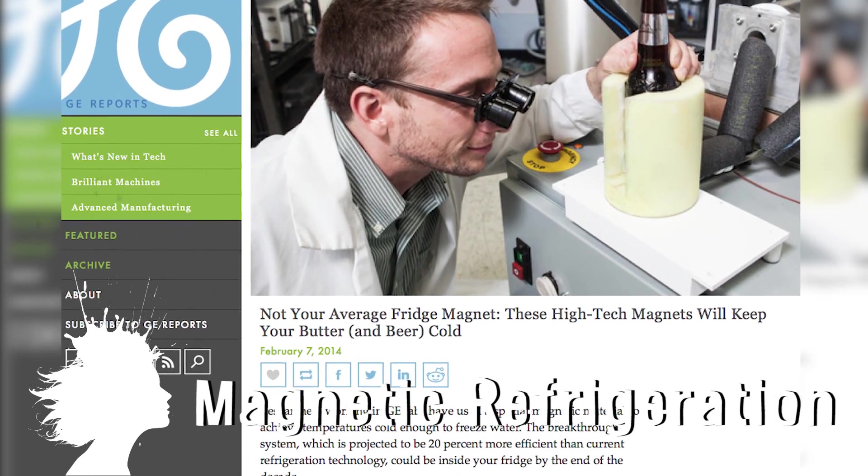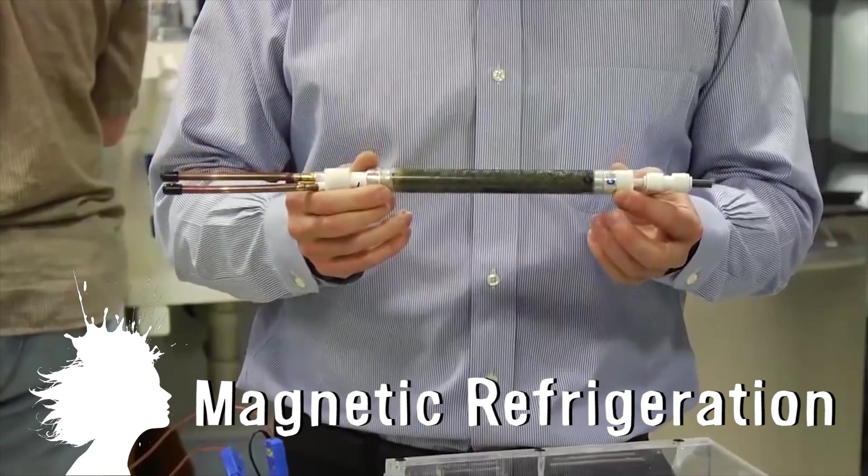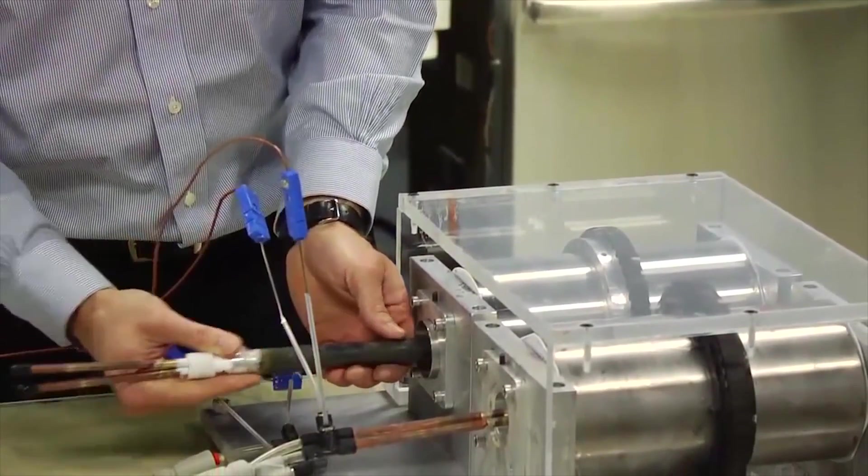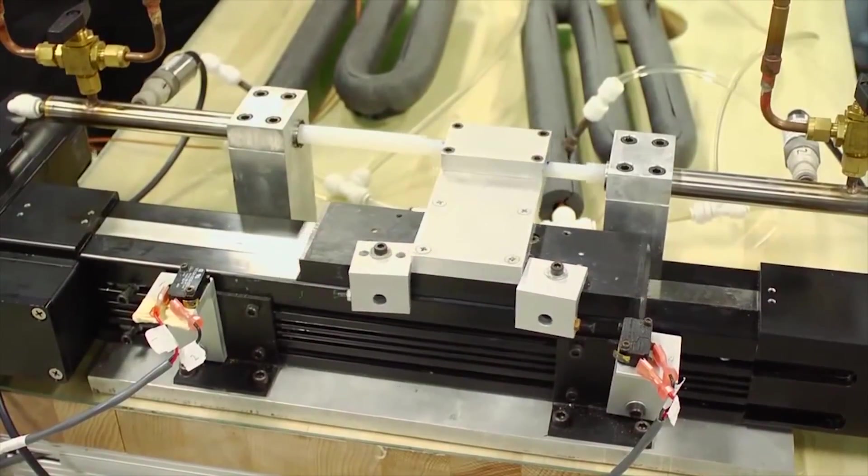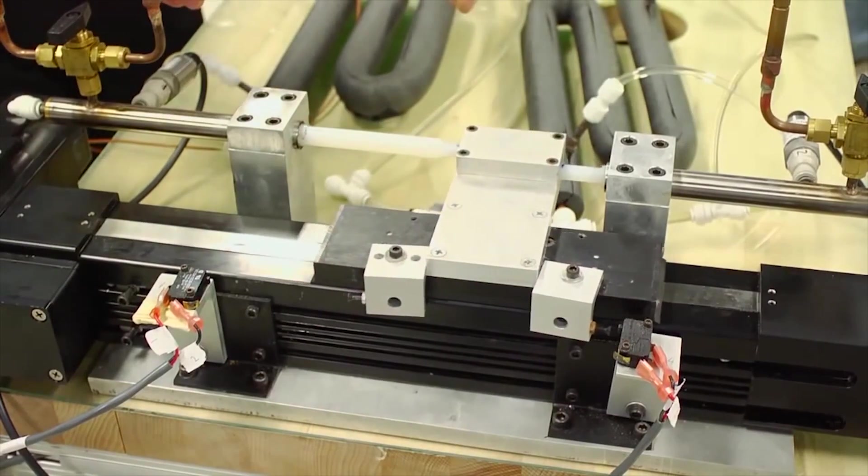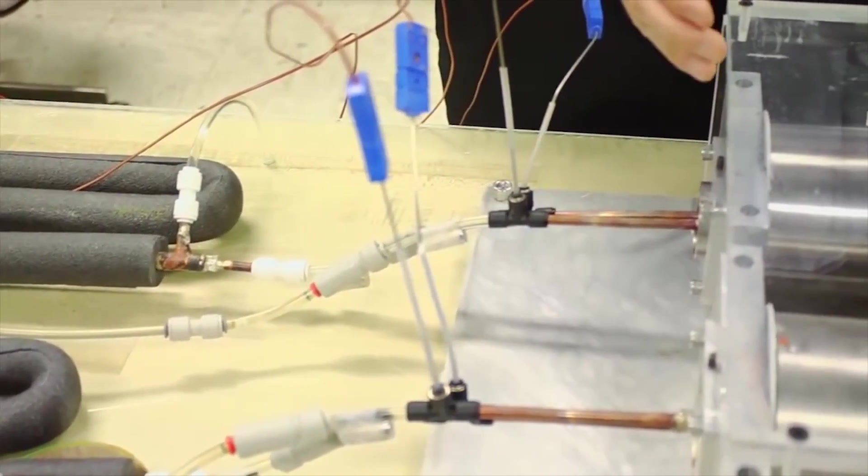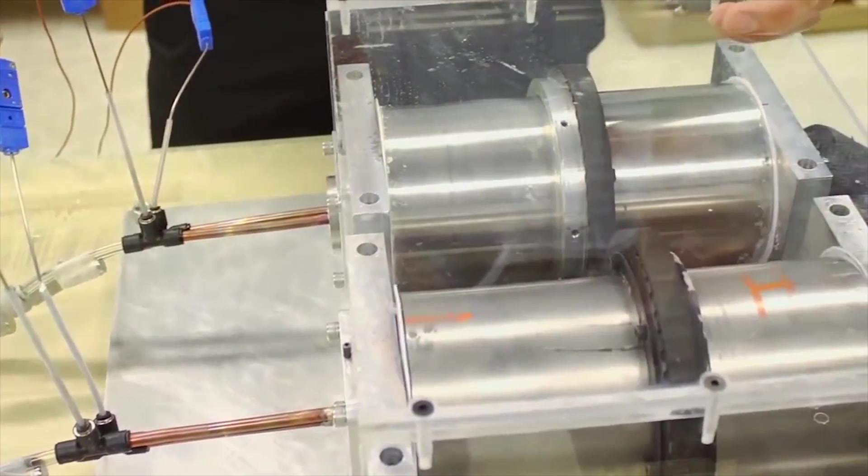GE is on the cusp of a refrigerator revolution by using magnets. The process of using magnetic material for refrigeration is projected to be 20% more efficient than traditional methods and it uses a water-based fluid flowing through a series of magnets to create heat rather than a chemical refrigerant and compressor. Recycling these fridges would be much easier on the environment and they hope to have it available within the next decade.